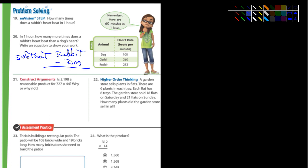Number 21, is 3,198 a reasonable product for, in other words, an answer for 727 times 44? Why or why not? Well, I'll let you figure that one out. You'll actually have to do that. 724 times 44. Number 22, a garden store sells plants in flats. I think you guys know what flats are. They have little plants in them. And you can take them out individually and plant them. Some flats might have six. Some might have a dozen. Some might have 20 or 25. It just depends.